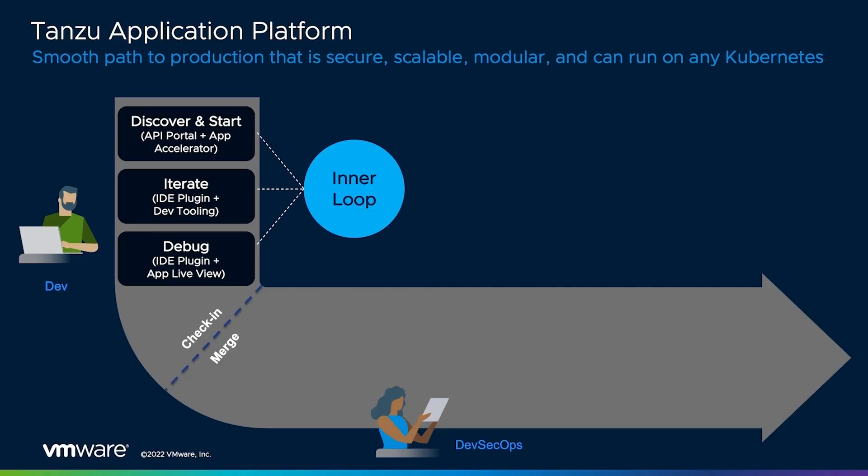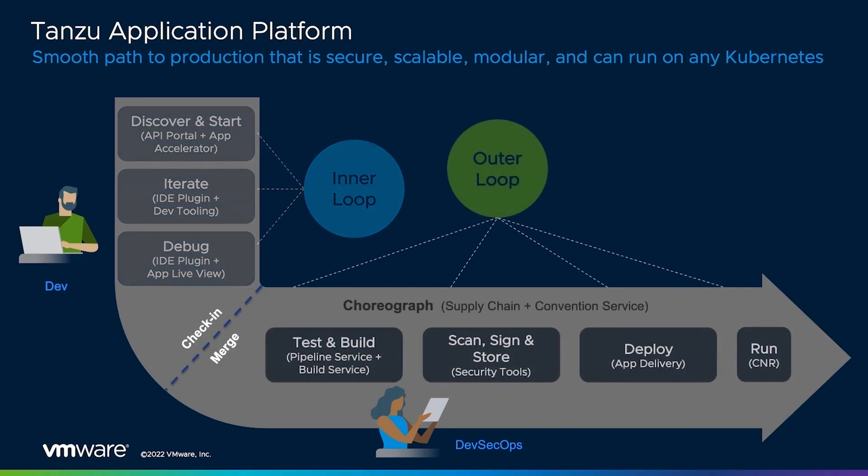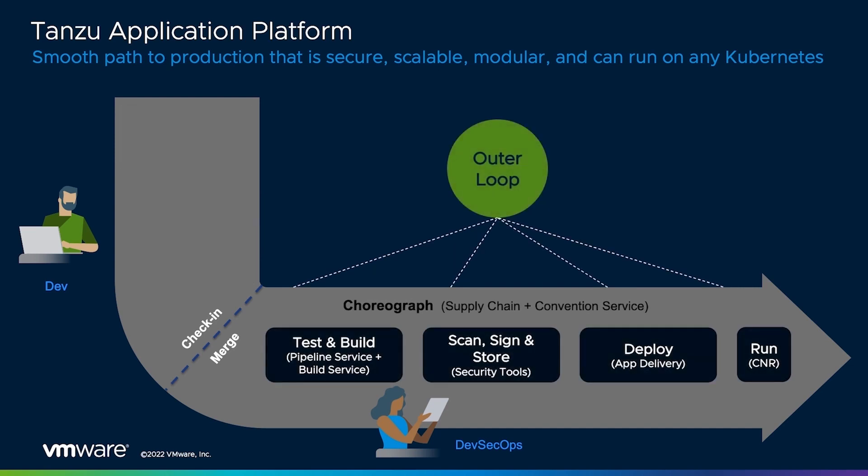Once the developer has completed development, we now focus on the outer loop. The Tanzu Application Platform can deploy to any Kubernetes cluster on any cloud based on your organization's pre-approved path to production, helping remove roadblocks typically associated with application deployment.